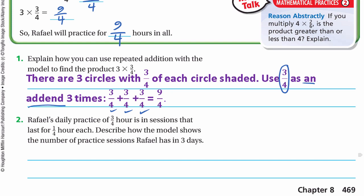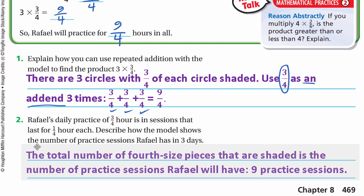Raphael's daily practice of three-quarters of an hour is in sessions that each last one-quarter hour. Describe how the model shows the number of practice sessions Rafael has in three days. The total number of quarter-sized pieces shaded is the number of practice sessions, which is nine. In one day it's three-quarters hour with quarter-hour sessions, meaning three sessions per day. In three days it will be nine sessions.